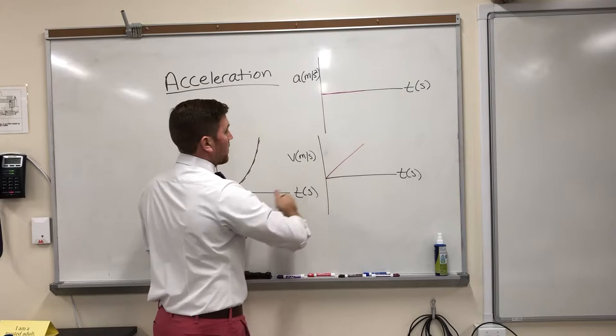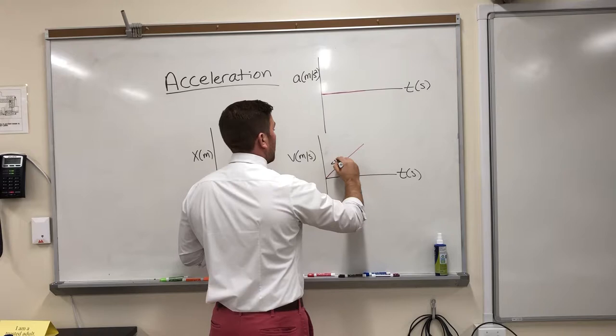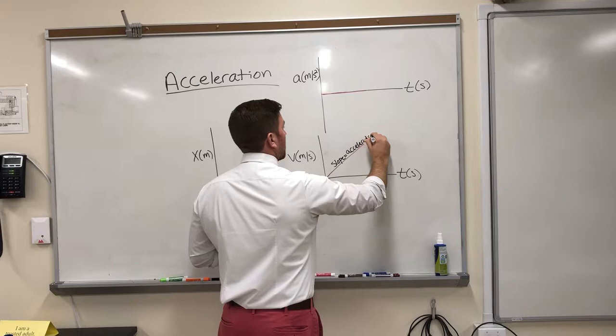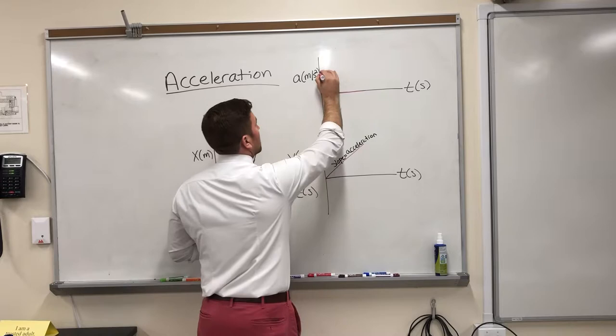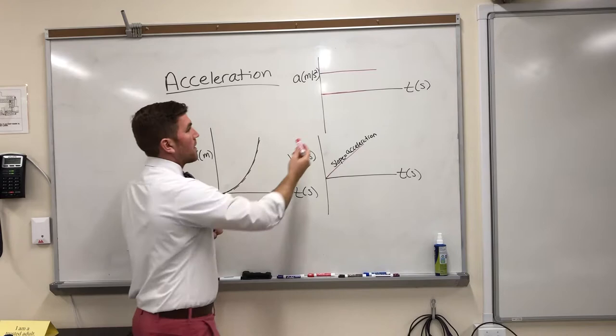So again, if I want to go to my acceleration graph, I look at the slope. Here is still the acceleration. Unlike last time, the slope is not zero, it's constant, and it's positive. So my slope, or my acceleration, is a constant positive value. So something that's in the positive, and it's a constant number the whole time.